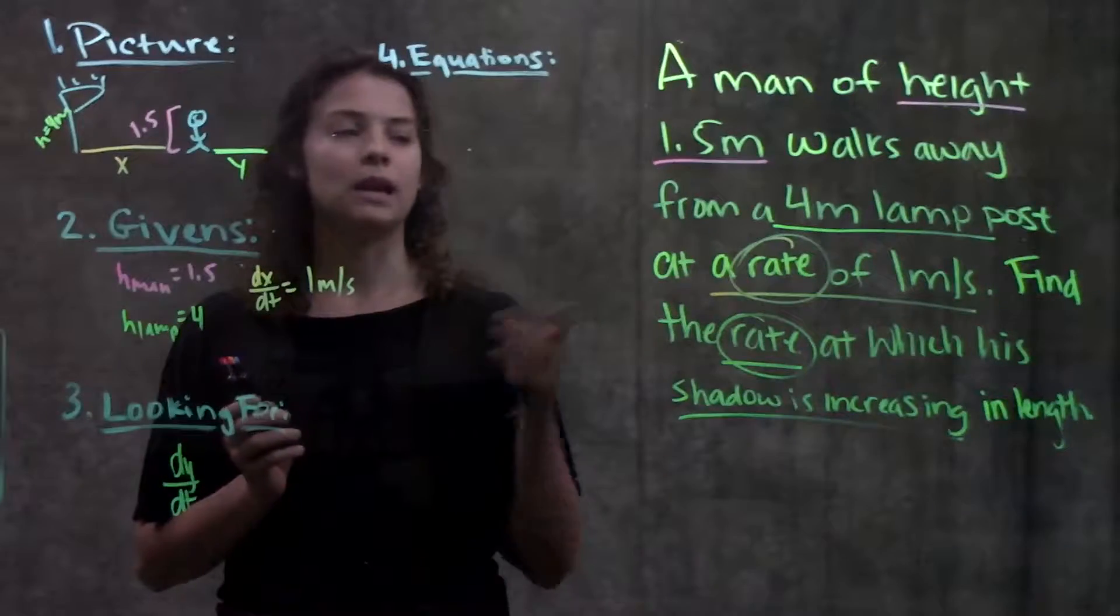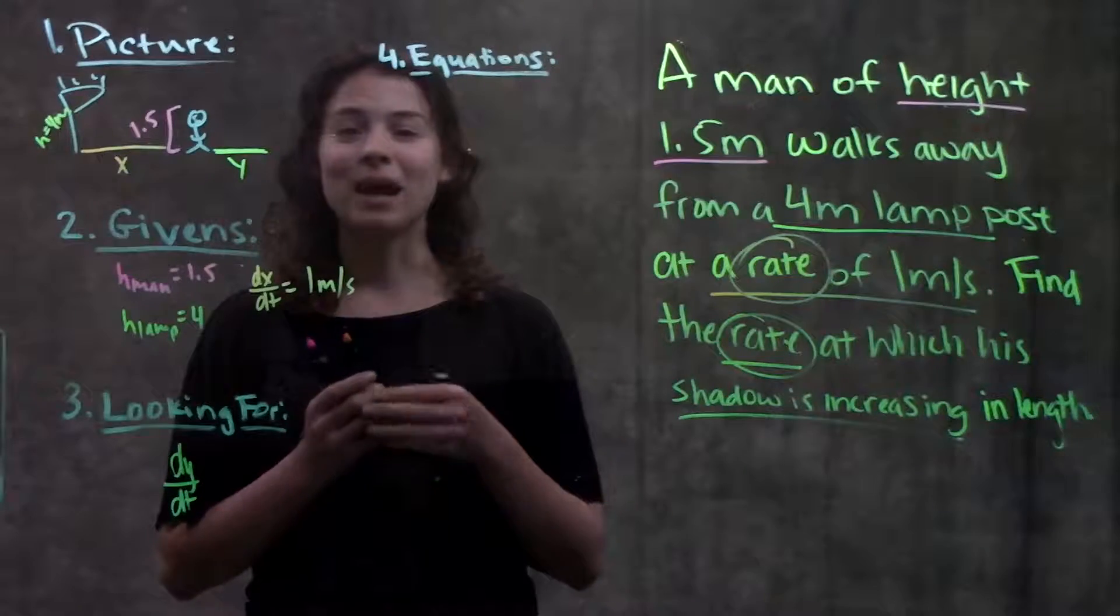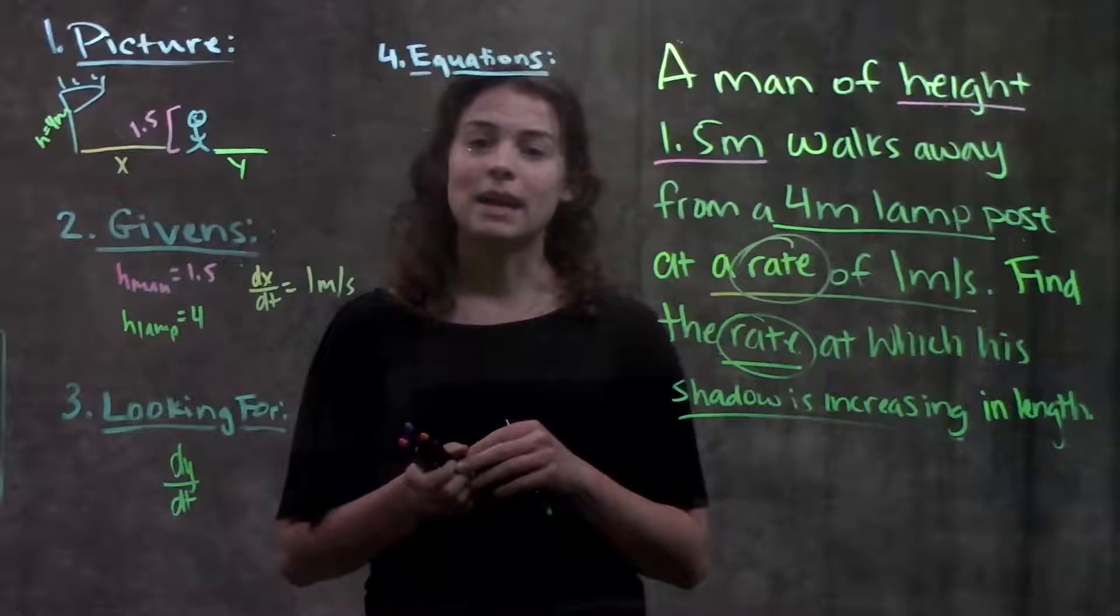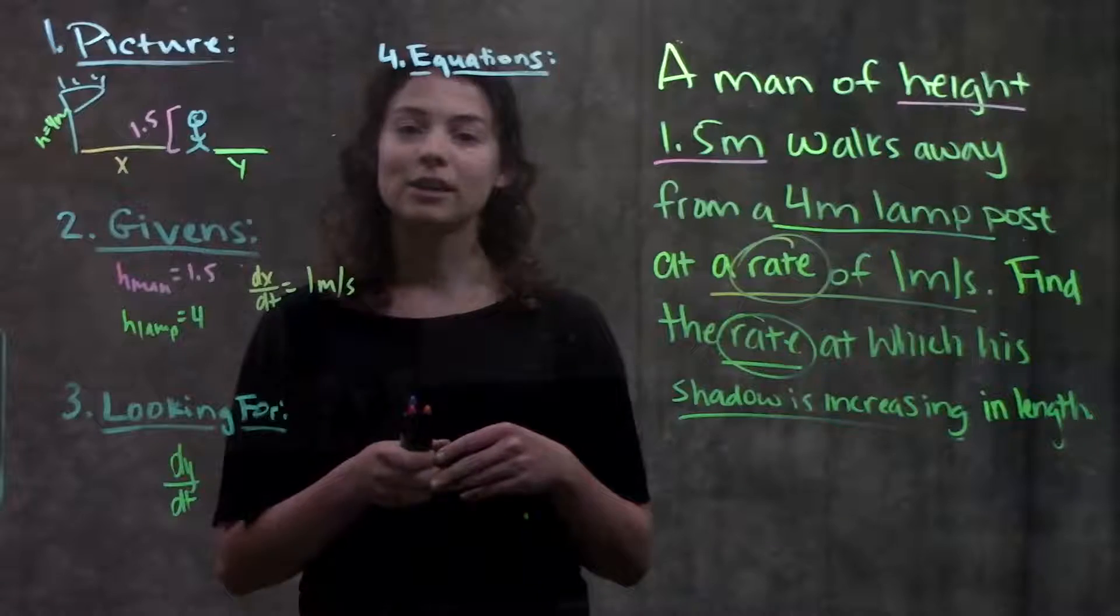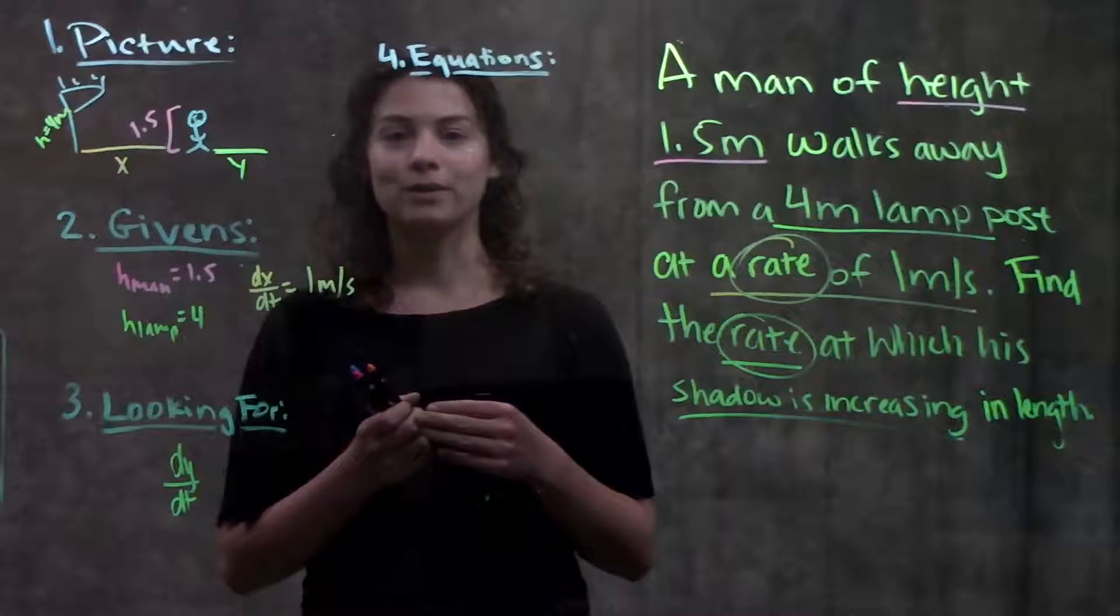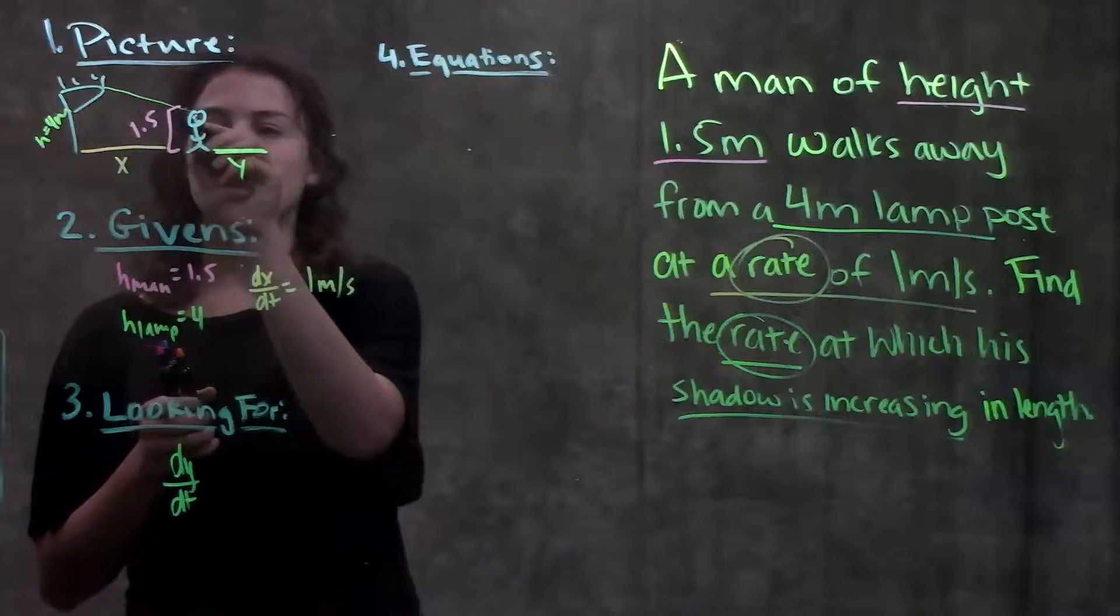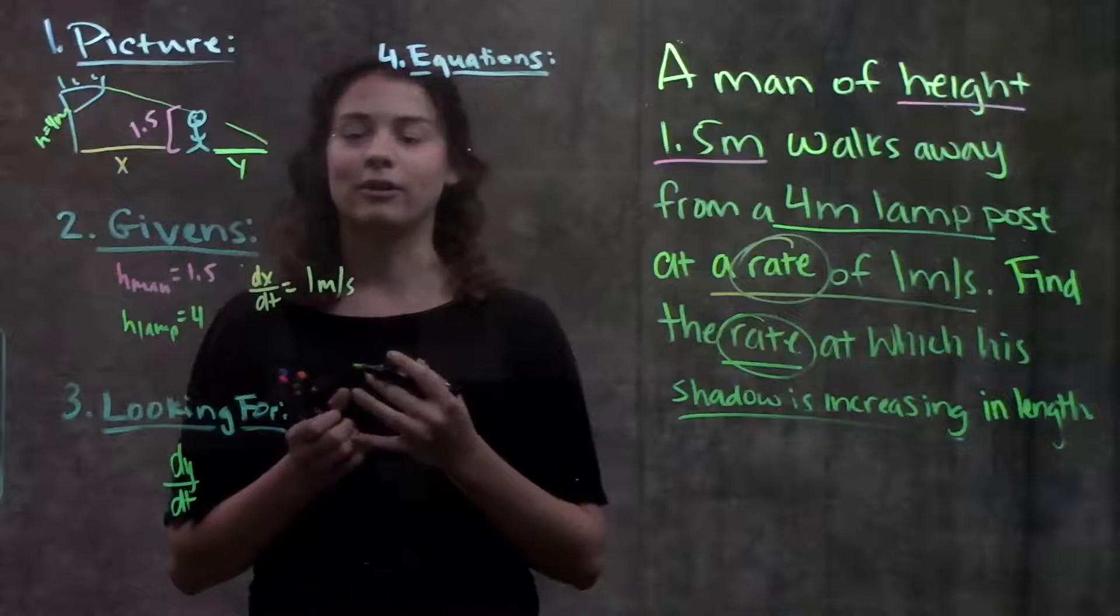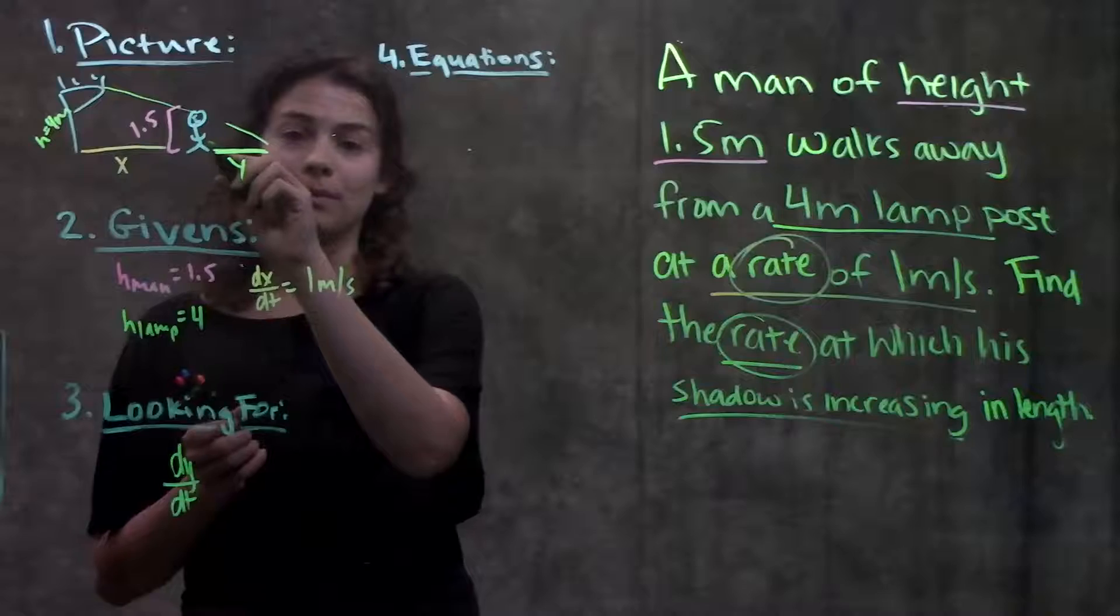Okay so steps one through three I just rewrote the problem in pictures and math terms. Step four I'm going to come up with an equation that relates all these things together. So a lot of times with these types of problems there's going to be triangles and you'll probably either use the Pythagorean theorem or you'll use similar triangles. Looking at my picture that I have here I see that if I were to draw a line all the way down to this bottom I have two similar triangles right? I have this big triangle with a lamp post but I also have a smaller triangle with the man.